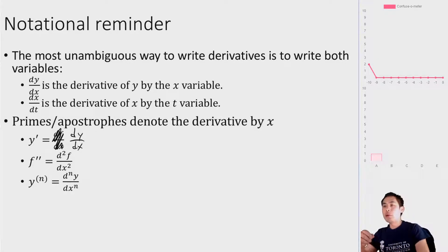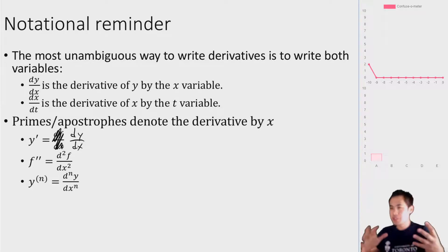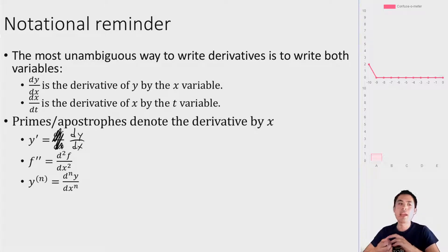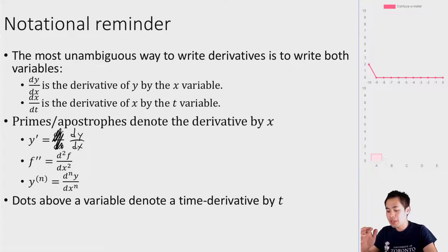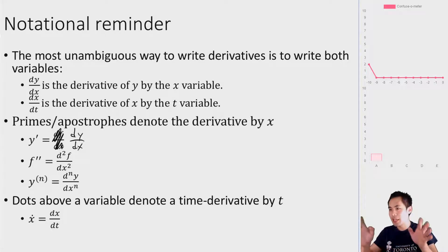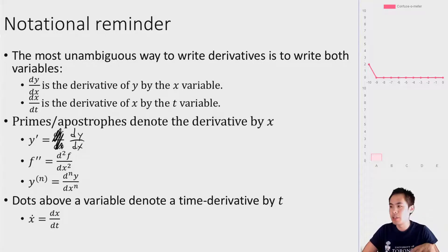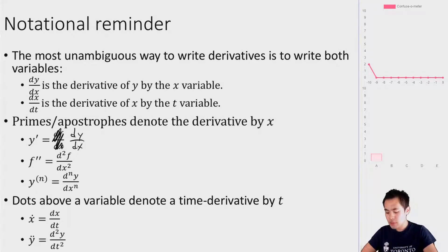I'm introducing one more notation you might have seen in physics classes: a dot above a variable, which normally denotes a time derivative. x-dot is dx/dt, and y-double-dot is d²y/dt². This notation is very common in physics and engineering courses, so I want to make sure you're familiar with it even if we use it only occasionally.